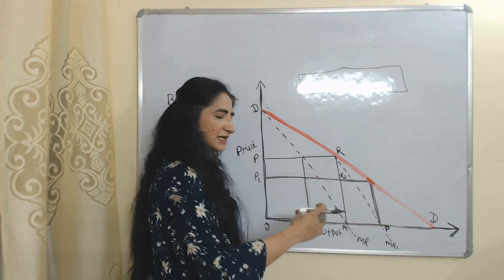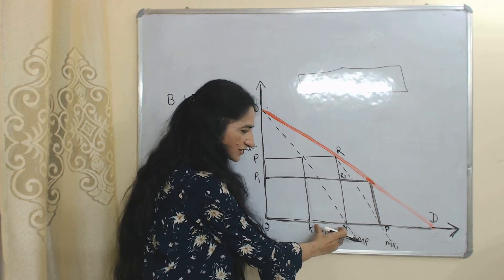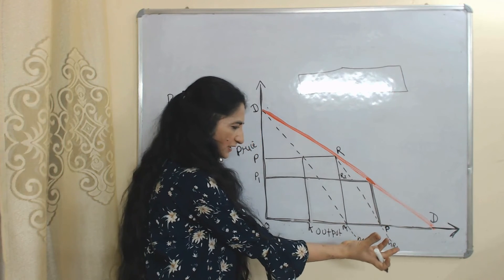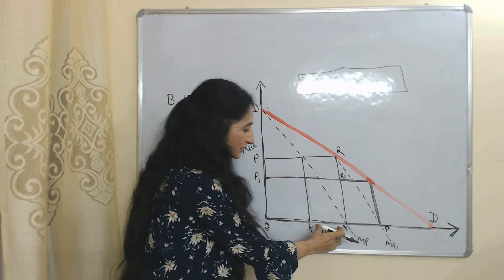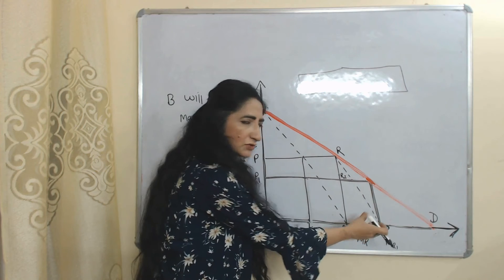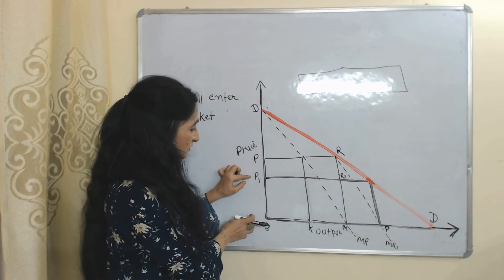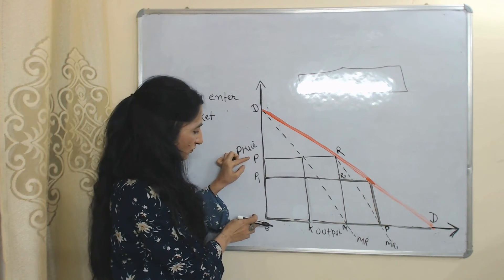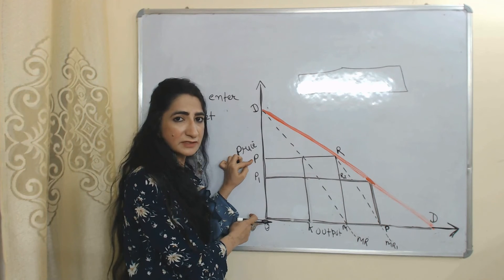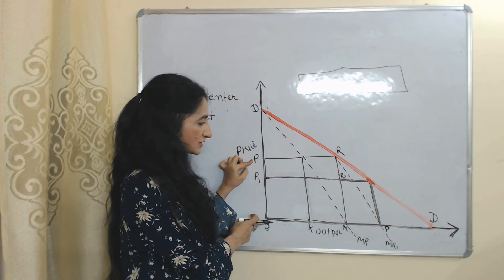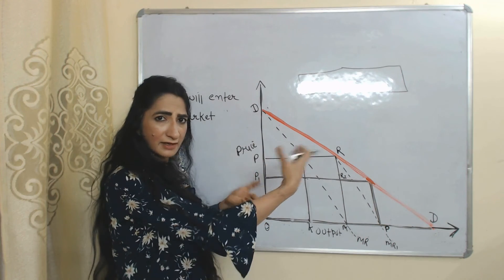So KM is exactly equal to MP. Now both firms together are producing OM — OK is produced by A and KM is produced by B. As A reduces output, price again increases from OP1 to OP. Now both firms are charging OP, which is equal to monopoly price. You can see how, with the strategy of A, both firms are able to charge monopoly price and earn maximum profit.